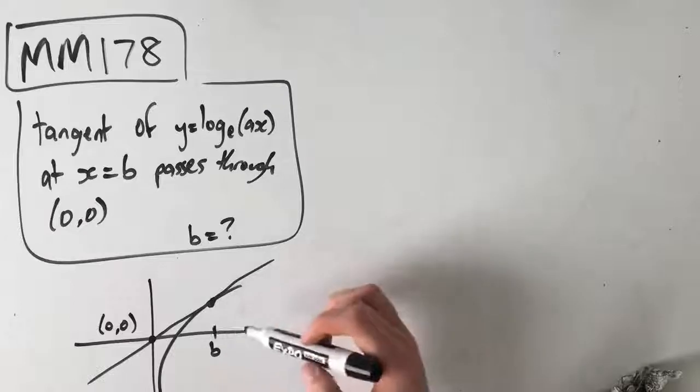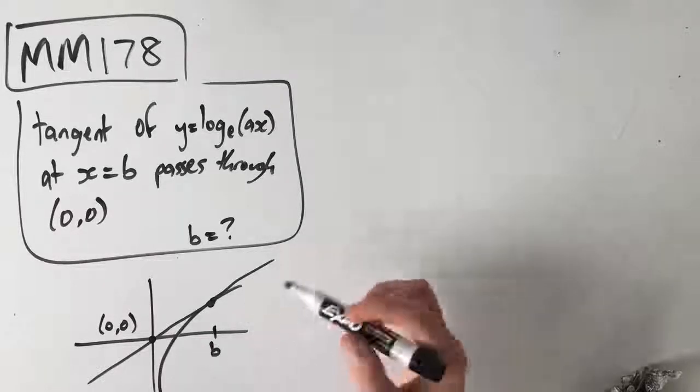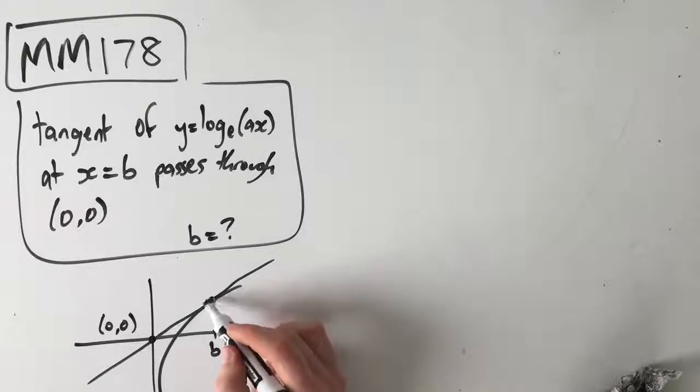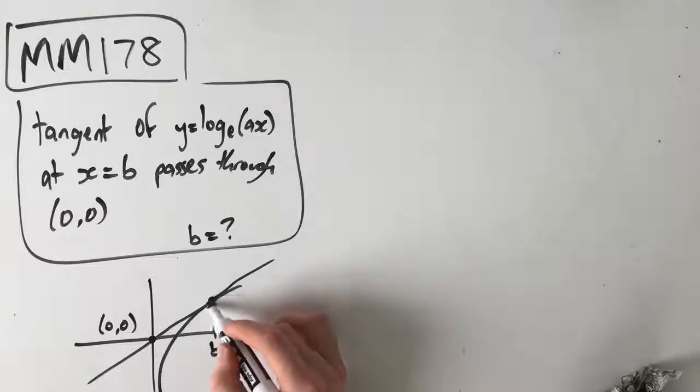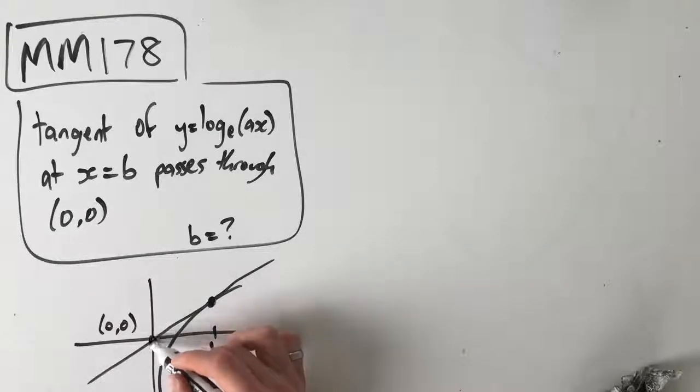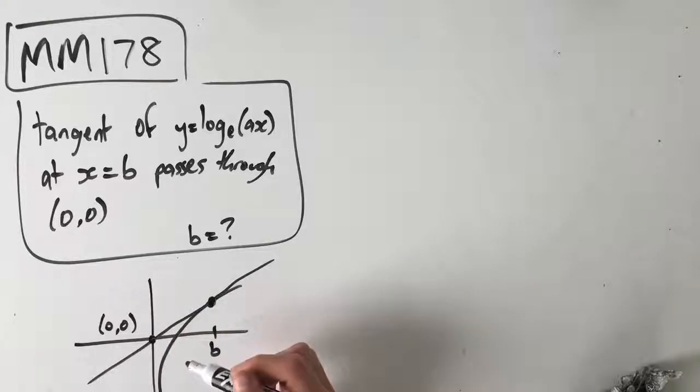which is this graph here, and the tangent to that graph at x equals b passes through the origin. So we've got this tangent passing through this point where x equals b and this point which is the origin (0,0). We need to find what b is equal to.